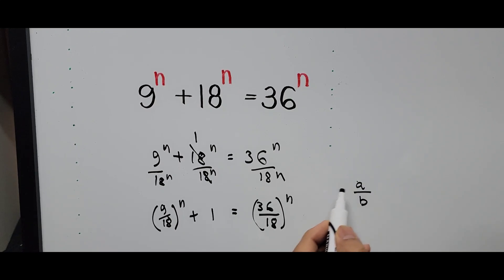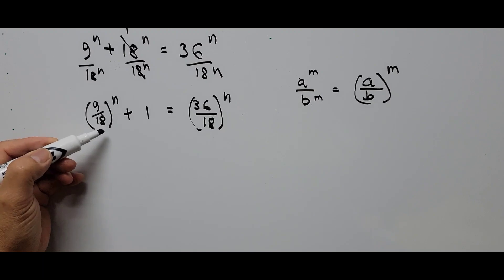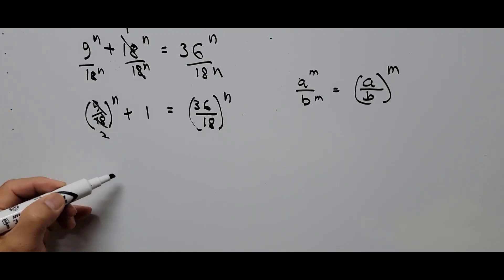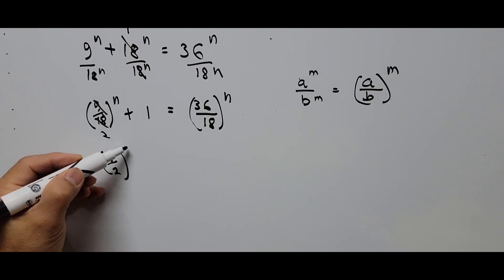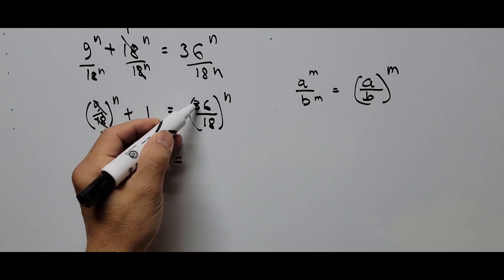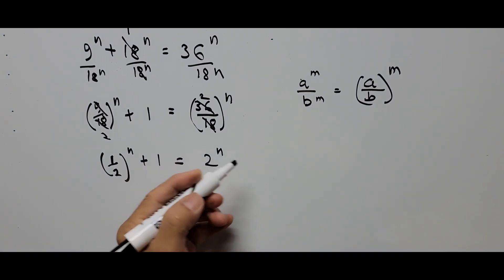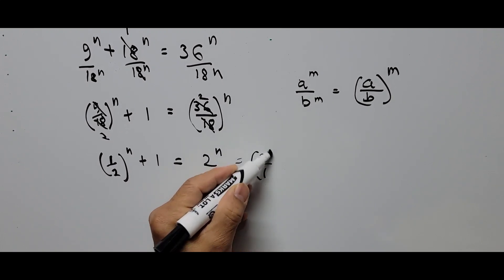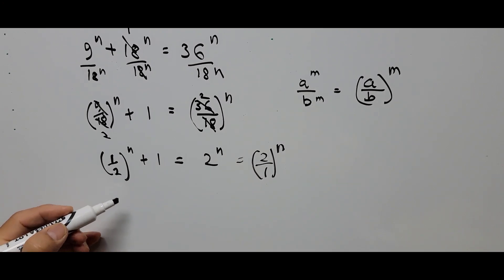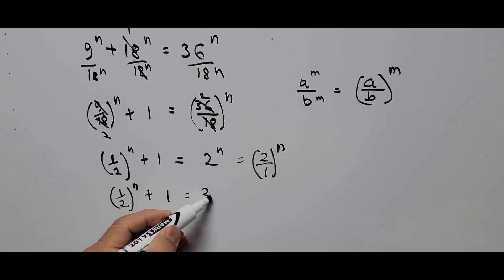Following the exponent rule: (a/b)^m = a^m / b^m. Simplifying each ratio: 9/18 = 1/2, so we get (1/2)^n plus 1 equals 36/18 which is 2, so the right side is 2^n. This can also be written as (2/1)^n, making the equation (1/2)^n + 1 = (2/1)^n.